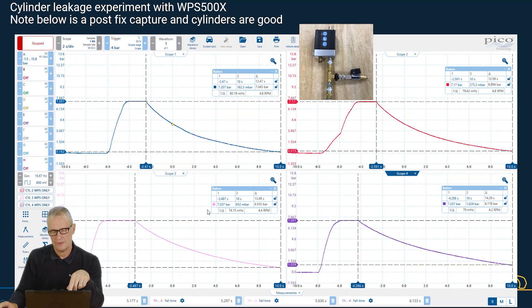Cylinder 2 is in red, cylinder 3 in magenta, and cylinder 4 in purple. I've allowed 7 bar of pressure into the cylinder, closed the tap off, and used a trigger as we get the decay.